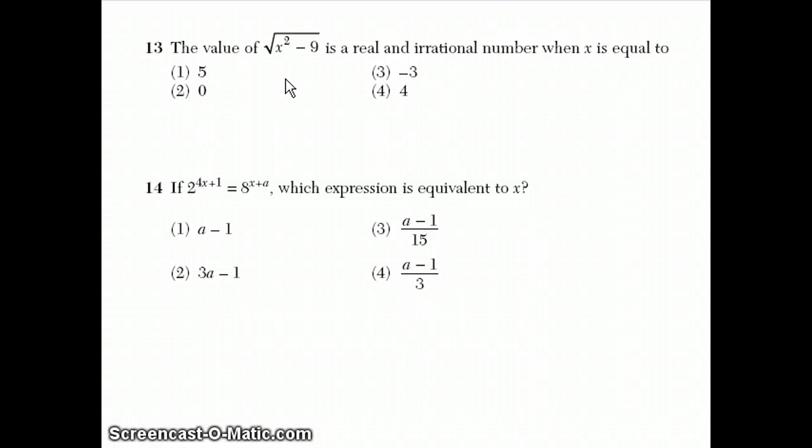Question 13 says, the value of square root of x squared minus 9 is a real and irrational number when x is equal to. Well, we don't want it to be negative underneath the radical. That would make it not real, but imaginary. And we don't want the thing under the radical to be a perfect square, because that would make it real and rational.